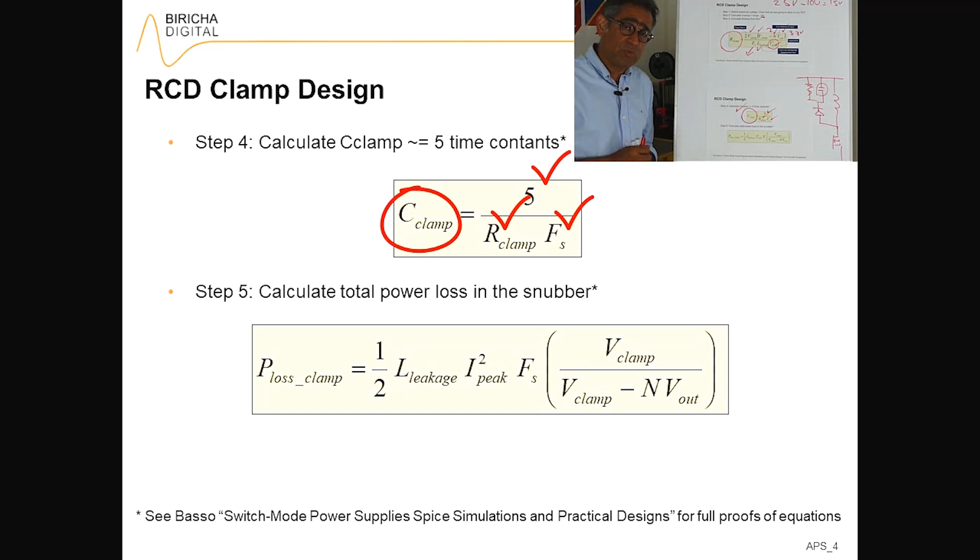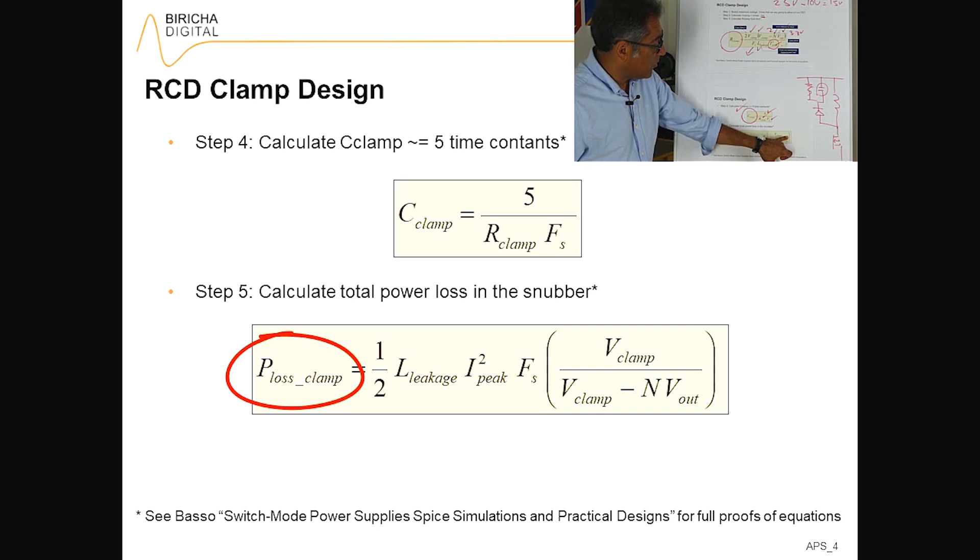One thing that you do have to do is to work out the total power loss, and the power loss is half of the leakage inductance, I peak squared, switching frequency, multiplied by V clamp over V clamp minus N V out. Again, if you look at this equation, I know the equation is big, but there is nothing here that you do not know.